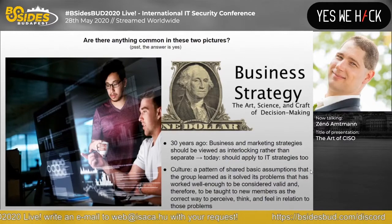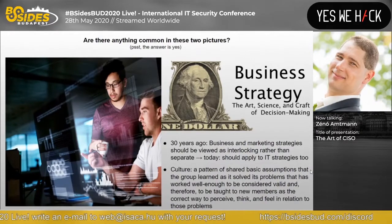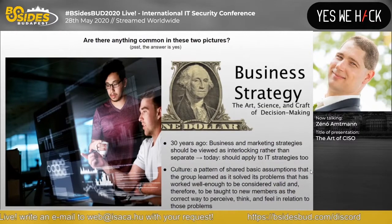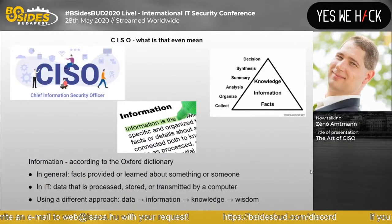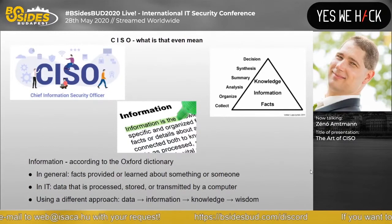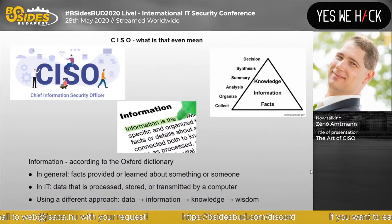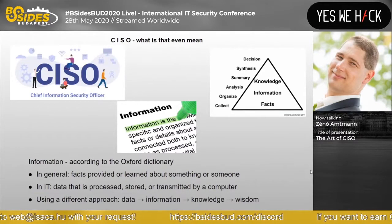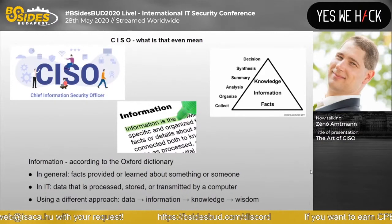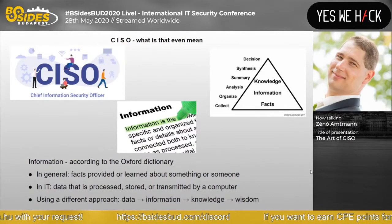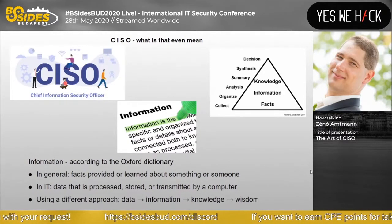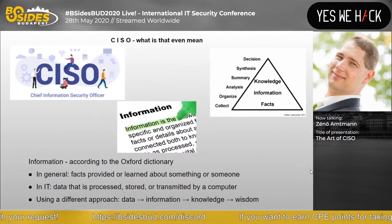But what the heck does any of this have to do with the CISO and the title of this presentation? Well, like in any good sandwich, the meat is in the middle. And in the case of the word CISO, the letters I and S are in the middle, meaning information and security. And in the media, another word is often used between these two, which is cybersecurity. We believe that we know what they mean, but do we really know?